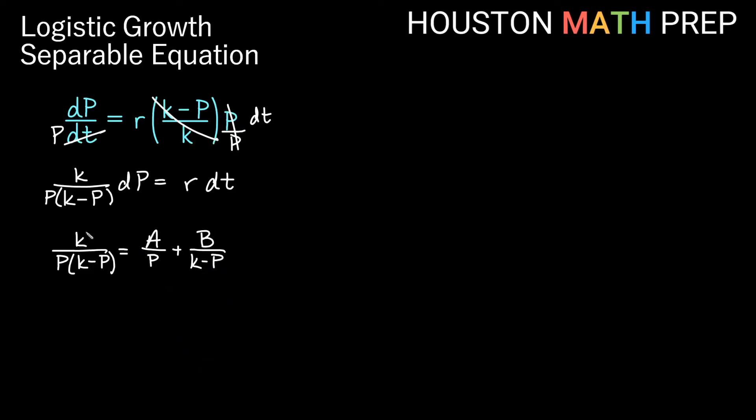If we get a common denominator, then my numerators would be k on the left side. This A, I would multiply in k minus P. That's what's missing underneath A in this fraction. And then to get a common denominator, I would multiply in a P to the B fraction. So I would get B times P. And remember, we would only solve the numerator. So I'm just going to focus on what we would get from the numerators there.